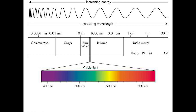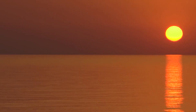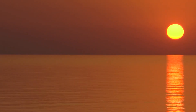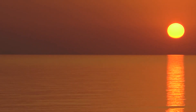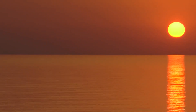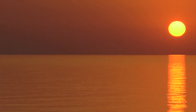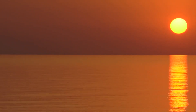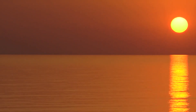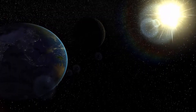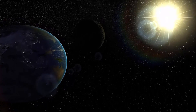Sunlight consists of a range of unique wavelengths, which collectively make up the visible light spectrum. These wavelengths vary from about 400 nanometers (nm) for violet light to 700 nm for red light.